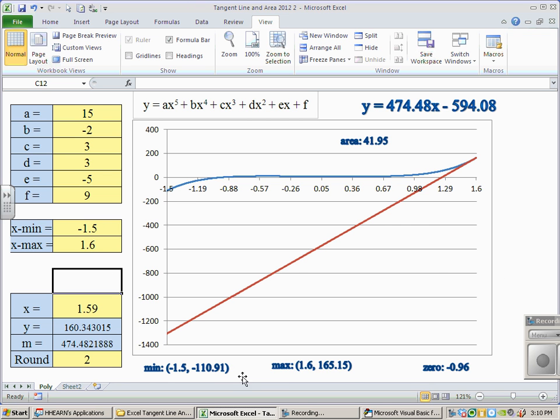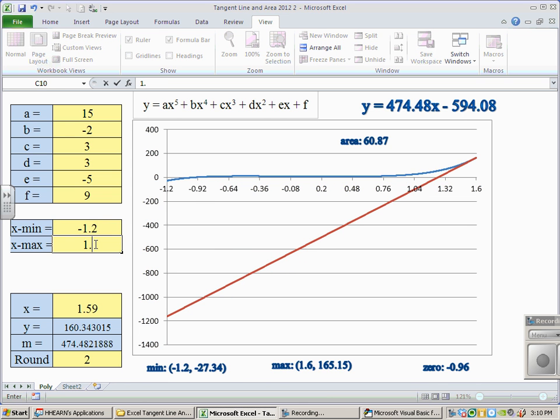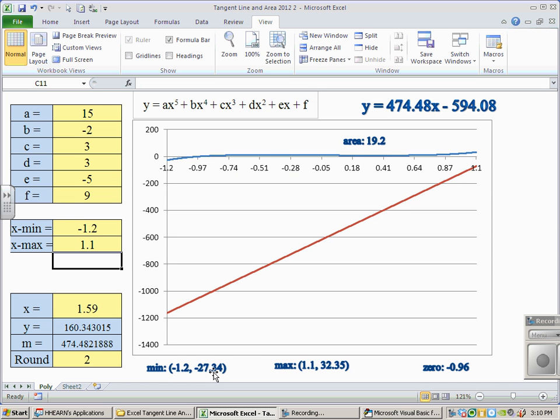The nice thing about that is I know I really wish that my Y scale went from negative 110 up to 165. Those values are there. Or if I change this to negative 1.2 and change this to 1.1, now I can see I really wish I was just looking from negative 27 to 32 and taking up some more blue space.